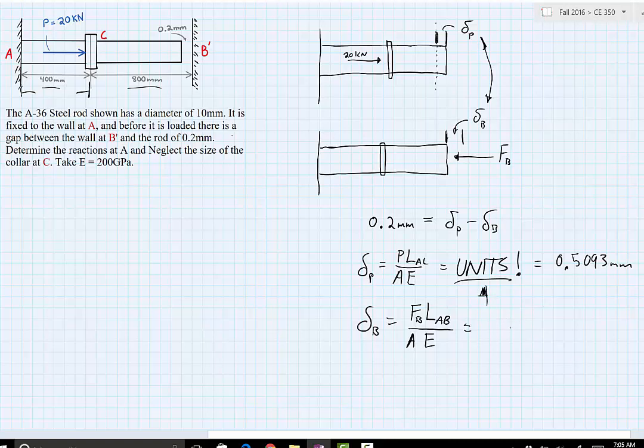You should then get a relationship that says delta sub B, because we have an unknown force and these other three are constants. The length is a constant and the area and modulus of elasticity. But our force is unknown. So you should get a relationship that says 76.394 times 10 to the negative 6 multiplied to the force of B.